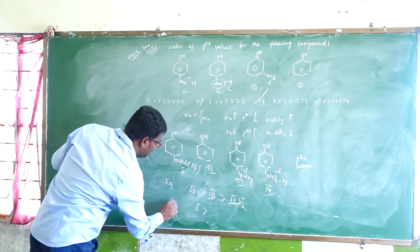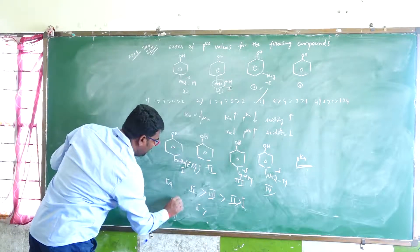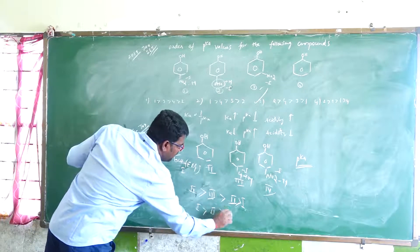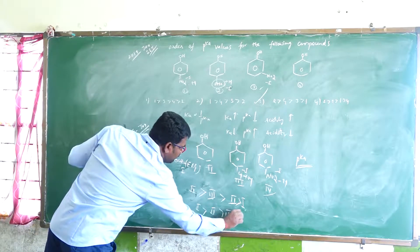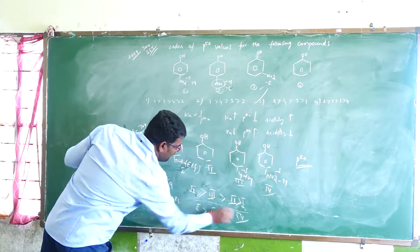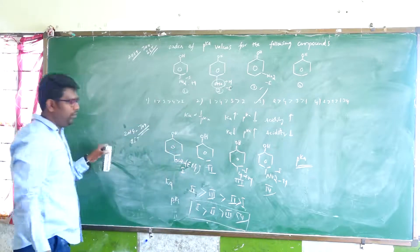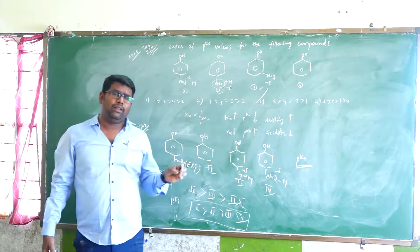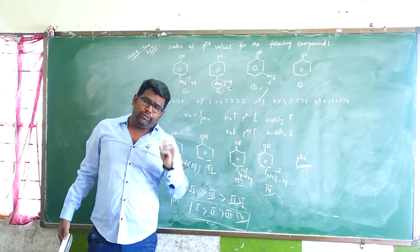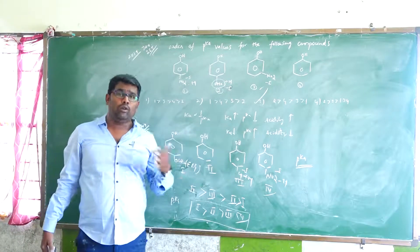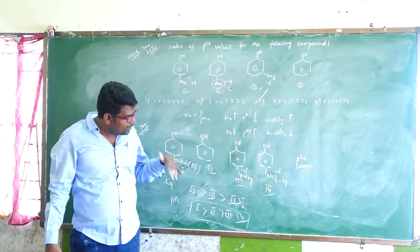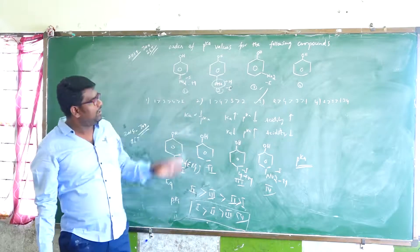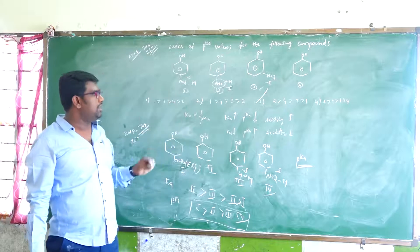Therefore, the first compound has the highest PKA value, followed by the second, then the third, then the fourth. This gives the decreasing order of PKA values: first, second, third, fourth. The key rule is: if acidity is more, PKA value is lower; if acidity is low, PKA value is higher. So this is the answer based on acidic strength.